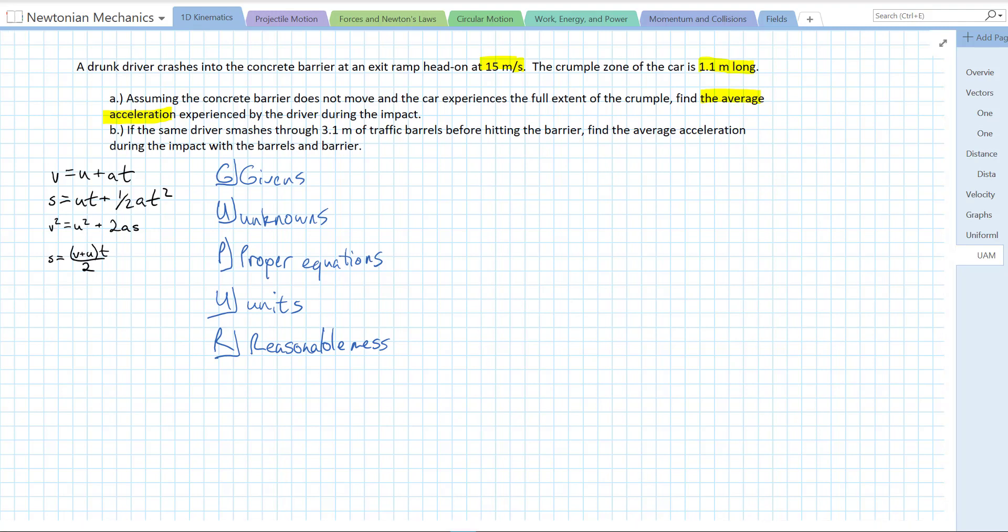Let's start with our givens. Actually, let's start with a diagram. We're given that we have a car and it's traveling with an initial velocity of 15 meters per second. So U equals 15 meters per second. And I'm saying that's to the right, so right is positive, left is negative. And it hits a barrier and it's going to crumble. The front end crushes over a distance of 1.1 meters. And at the end of that 1.1 meters, it's stopped.